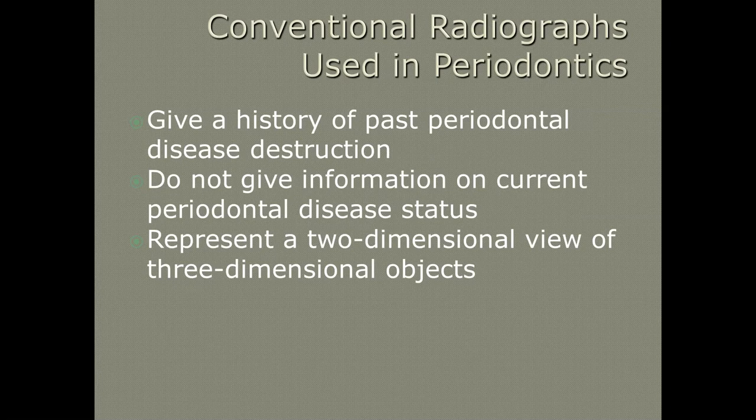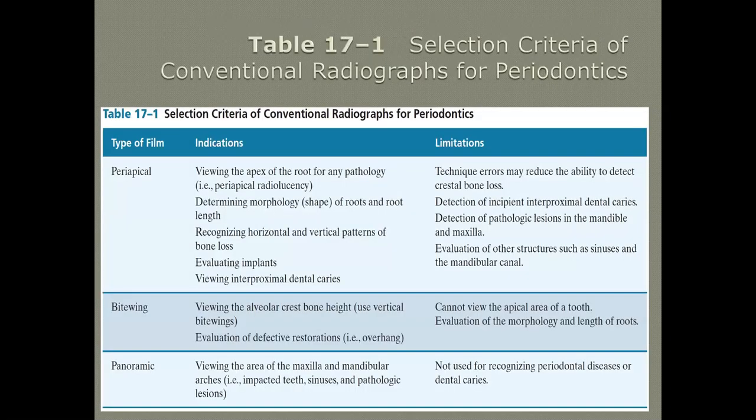We use radiographs to show past periodontal destruction — they don't really give us any current information on disease status; they just let us know what has happened in the past. Radiographs represent a two-dimensional view of a three-dimensional object, so they don't give us a true picture of what's going on around the entire tooth. With CT scans we're getting more information.